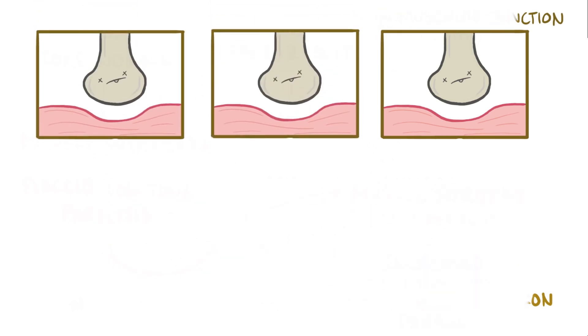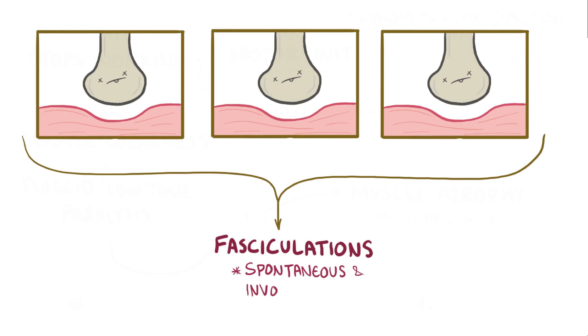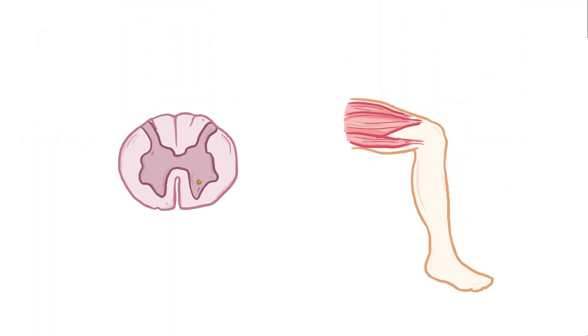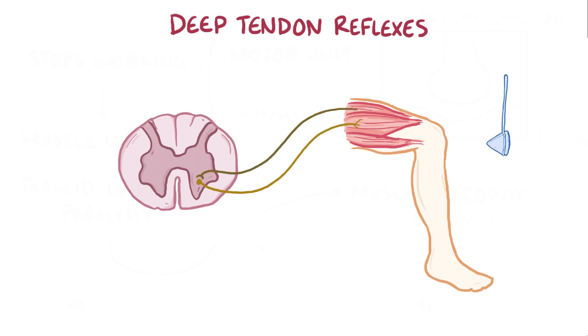When a lot of these muscle fibers are affected, fasciculations can happen, which are spontaneous, involuntary muscle contractions. Alpha motor neurons also carry the signal for muscle contraction in deep tendon reflexes, like the knee-jerk reflex, and they diminish or disappear when alpha motor neurons are damaged.